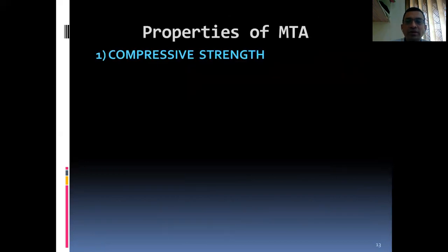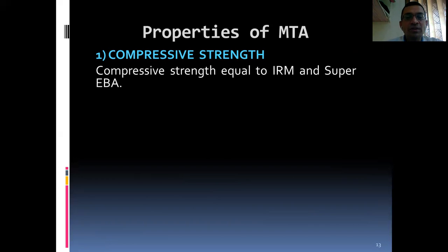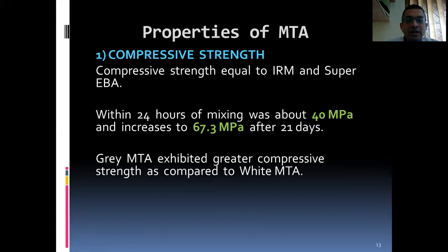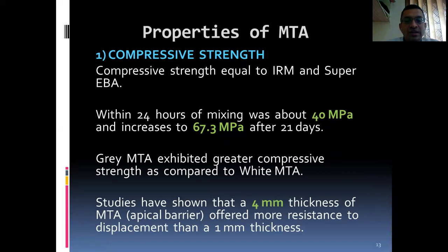Properties of MTA — Compressive strength: it is equal to IRM and Super EBA. Within 24 hours of mixing there is a compressive strength of 40 MPa, which increases to 67.3 MPa after 21 days. Grey MTA exhibited greater compressive strength compared to white MTA because of its larger particle size. Studies have shown that 4 mm thickness of MTA offers a better apical barrier and more resistance to displacement than a 1 mm thickness.